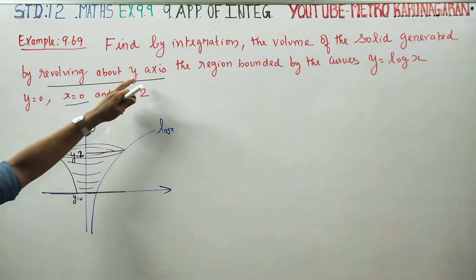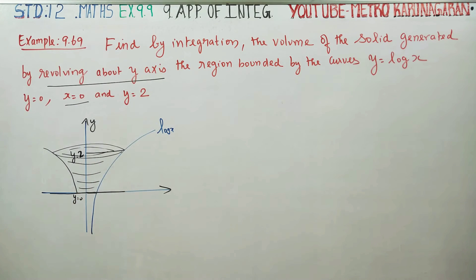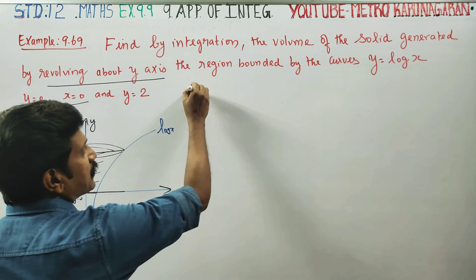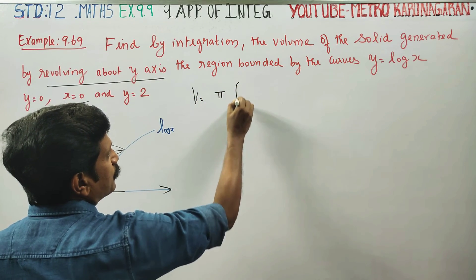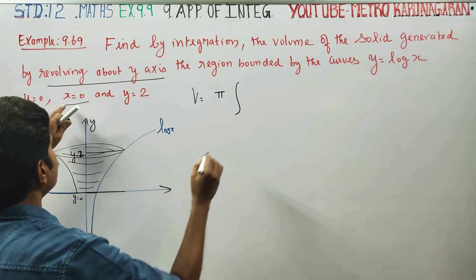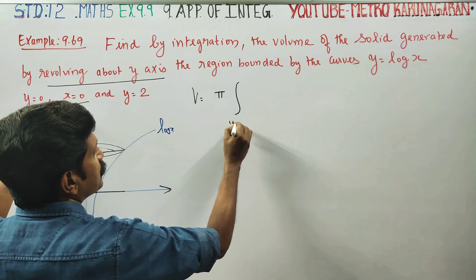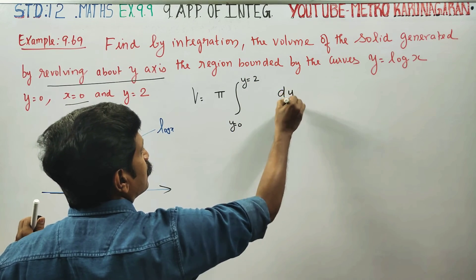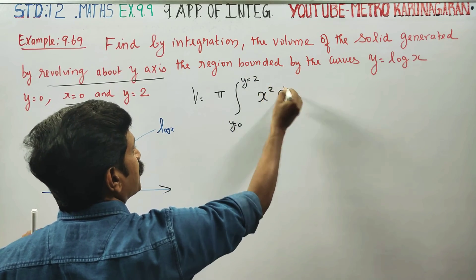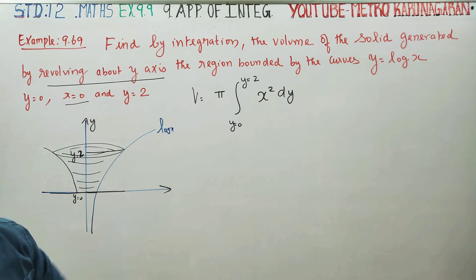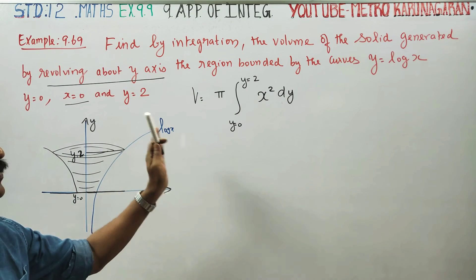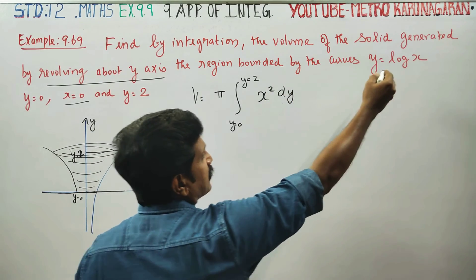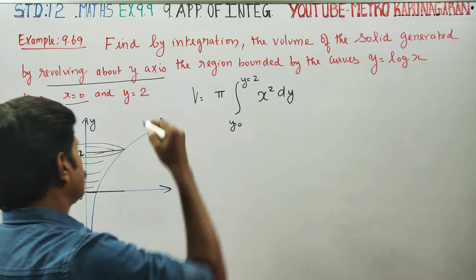Using the disk/shell integration formula for revolution about the y-axis, the volume is equal to the integral from y = 0 to y = 2 of π x² dy.